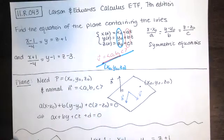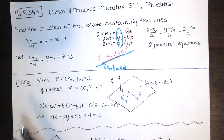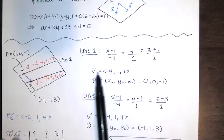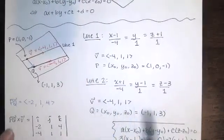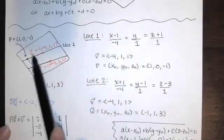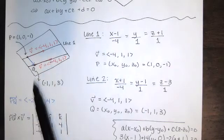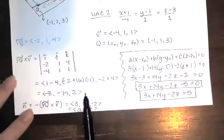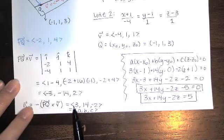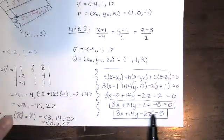Let me briefly recap. We're given a plane containing two lines. To find the equation of a plane we need a point and a normal vector. Since each line lies in the plane, any point on a line is in the plane — we used the symmetric equations to identify direction vectors and points P and Q. The direction vectors turned out to be equal, so we couldn't just take their cross product. Instead we created vector PQ, giving us two non-parallel vectors in the plane. Their cross product gave the normal vector. We then substituted the normal vector and point P into the plane equation and simplified.